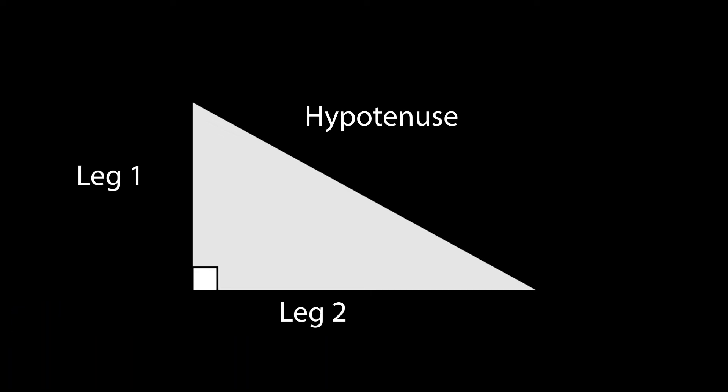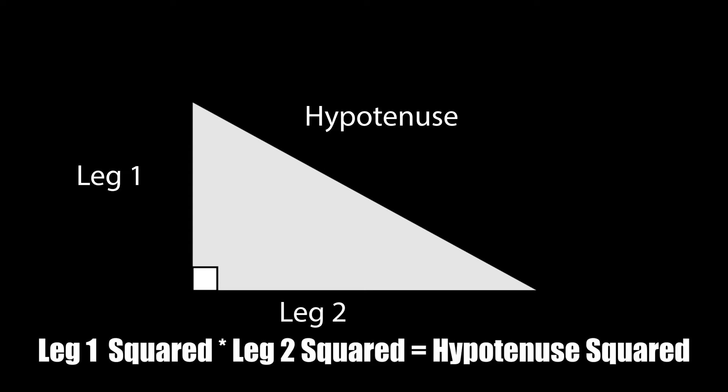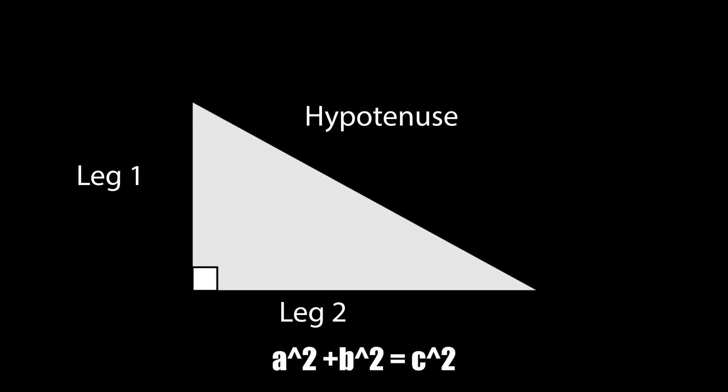The theorem simply states that the sum of the squares of the legs of the right triangle is equal to the square of the length of the hypotenuse. This is often represented as a squared plus b squared equals c squared.